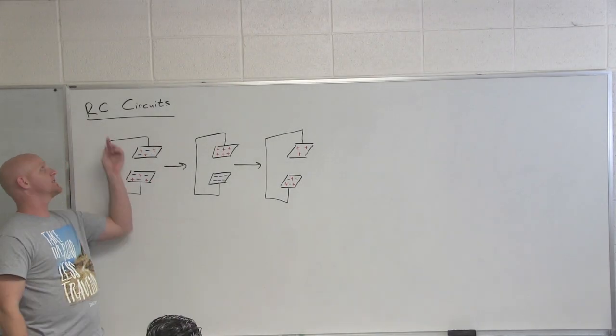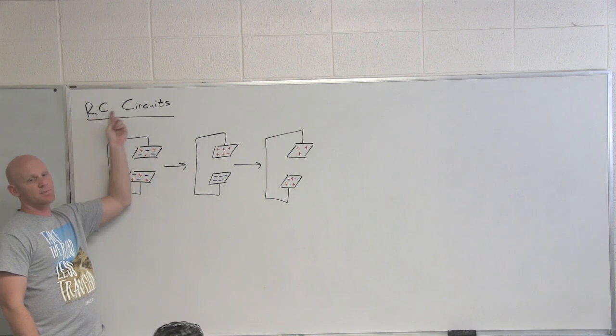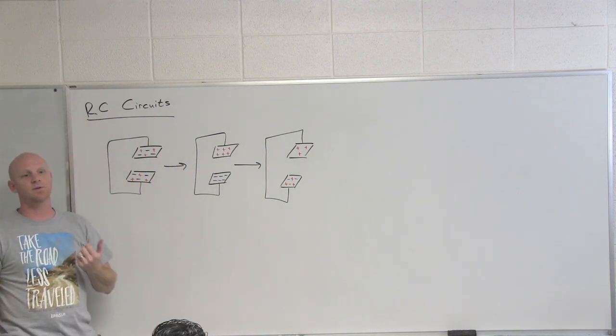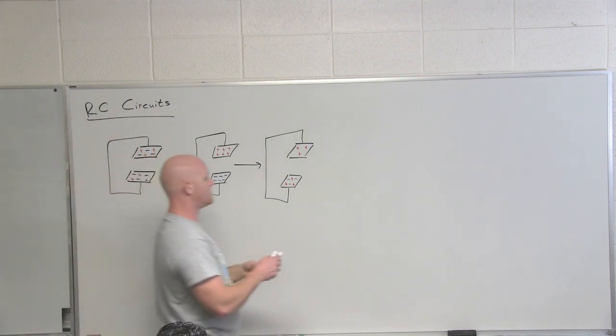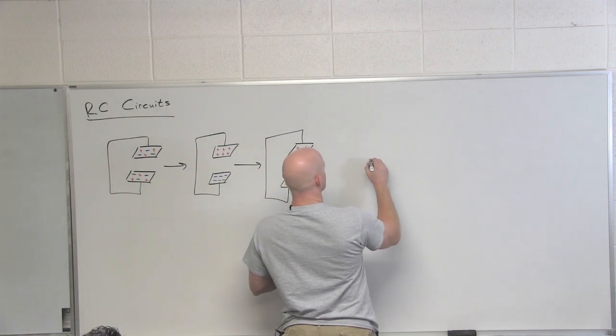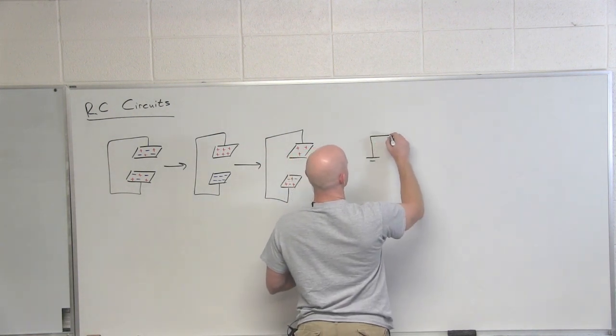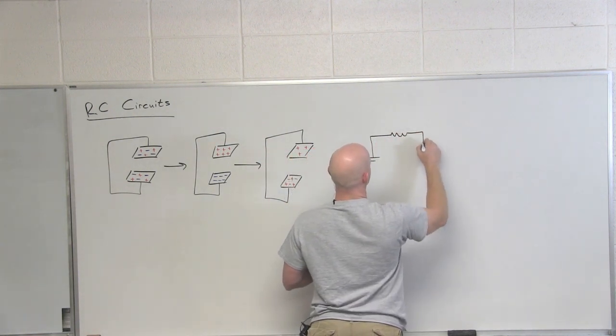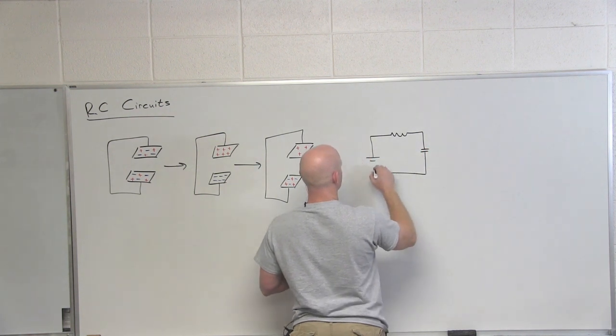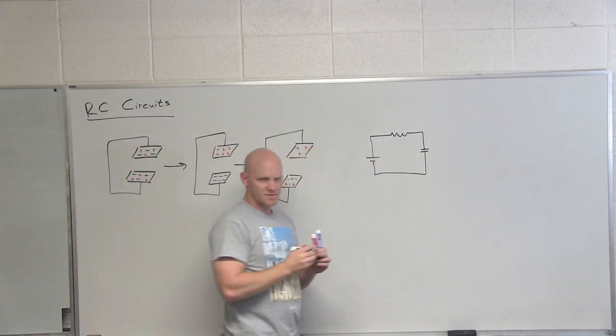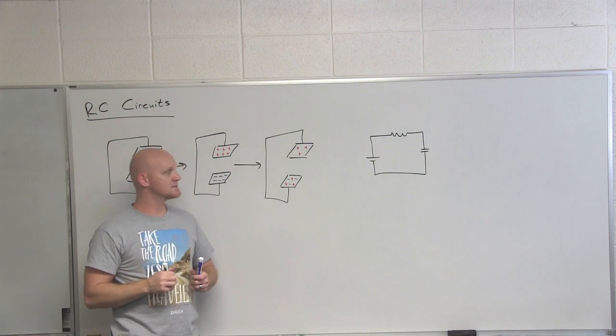Now we're going to talk about what are called RC circuits. The R and the C stand for resistor and capacitor, so it's a circuit that contains both a resistor and a capacitor. Such a circuit might look like this, with a resistor and a capacitor in series.